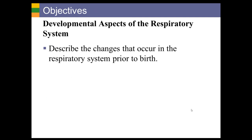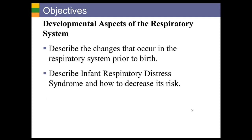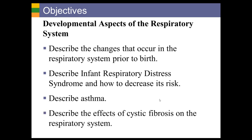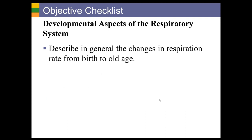The last thing I want to cover for the respiratory system is developmental aspects. We'll look at changes from birth through adulthood and into old age. We'll describe Infant Respiratory Distress Syndrome, asthma, SIDS and how to decrease its risk, cystic fibrosis and how it affects the respiratory system, and then changes from adulthood to old age.